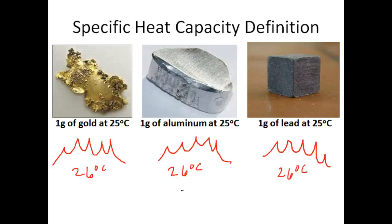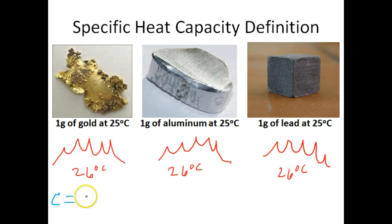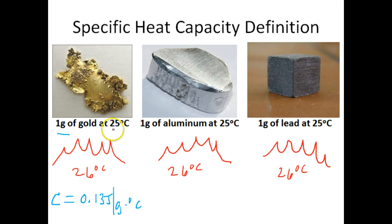These specific heat capacities can often be found in a table in your textbook, or you can Google search 'specific heat capacities' and a table will pop up. So to answer our question: how much thermal energy will the gold need to raise its temperature from 25 to 26 degrees Celsius with only one gram of it? Specific heat capacity is typically denoted by the variable lowercase c. I looked this up and the specific heat capacity of gold is 0.13 joules per gram degree Celsius. This means one gram of gold needs to absorb 0.13 joules of energy to raise its temperature one degree Celsius.